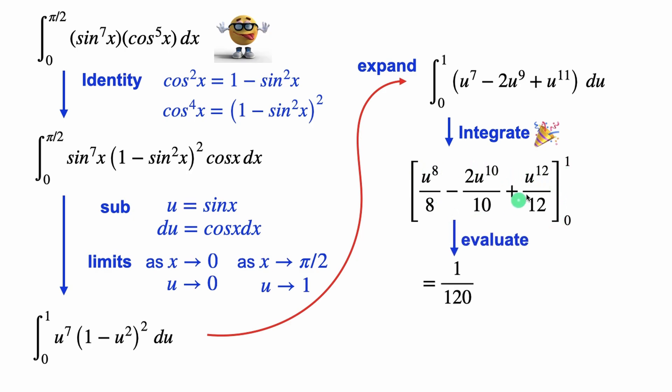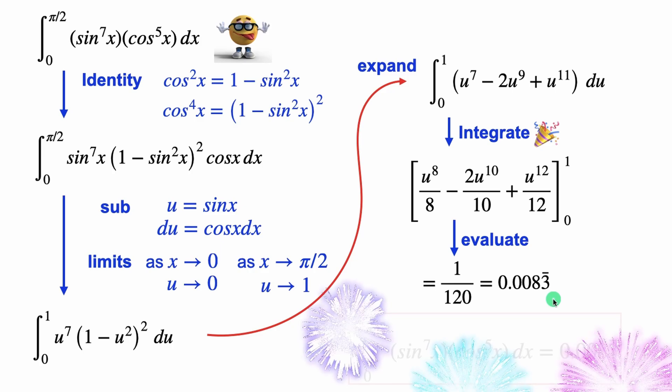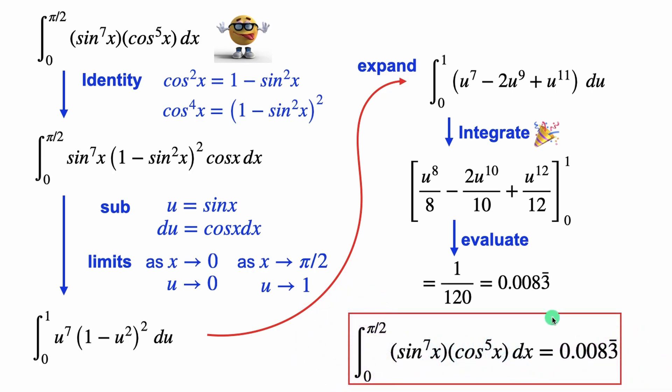At 0, this is 0, so we just put 1 in there, and if you find a common denominator, which I did, it becomes 1 over 20, or if you just punch it into your calculator, you should get 0.0083 repeating, and my friends, that's our integral in all its glory.